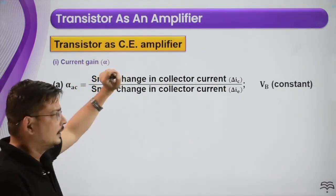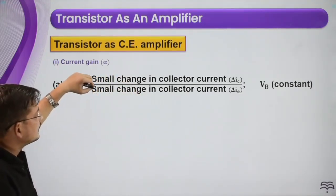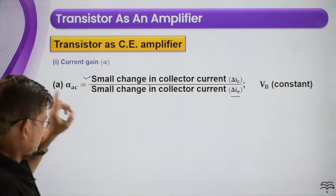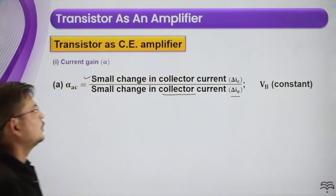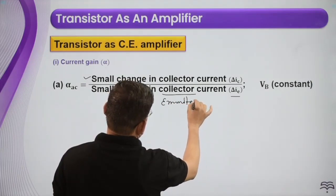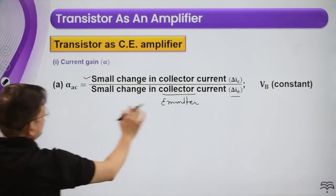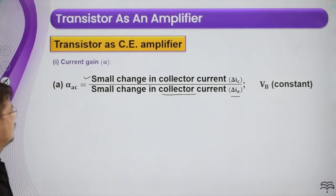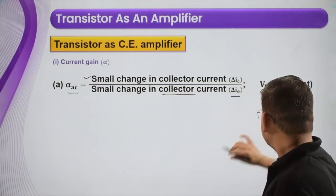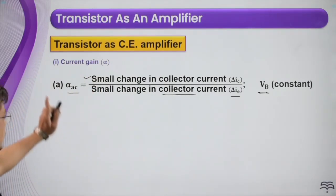Current gain in the common emitter amplifier is given as the small change in collector current divided by the small change in emitter current. This is the AC current gain, alpha AC, and here the base potential will be constant when we talk about the common emitter configuration.